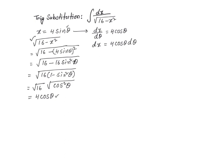Now, I could take these values and plug into the original integral. So, dx equals 4 cosine of theta d theta, and square root of 16 minus x squared is equal to 4 cosine of theta, so I divide by 4 cosine of theta. This 4 cosine of theta and 4 cosine of theta cancel out. That gives me integral d theta, but integral d theta is nothing but theta plus some arbitrary constant.